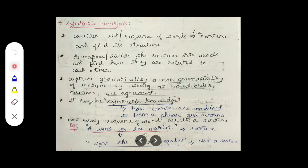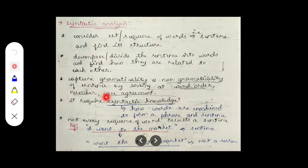In the second step, we have to divide or decompose the sentence into words and find how these words are related to each other — how they are meaningful to each other. Next, we capture the grammaticality and non-grammaticality of the sentence by looking at word order, number, and case agreement.